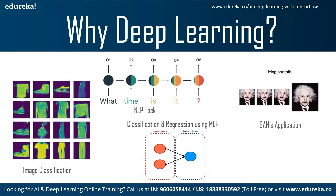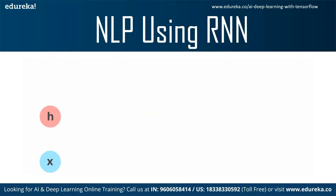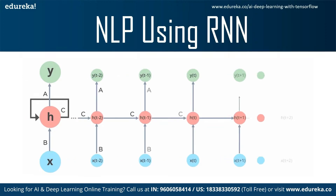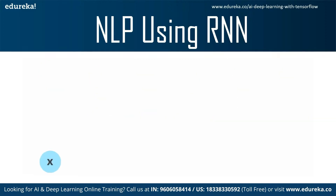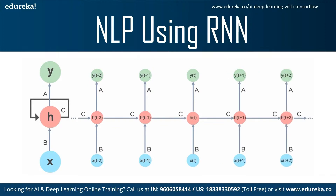Now let's understand how we can process natural language data using RNNs. RNN stands for Recurrent Neural Network and is used to deal with sequential data, which can be time series or textual data of any format. RNNs have a concept of internal memory — they can remember important things about the input received, which allows them to be precise in predicting the next outcome. Examples of sequential data include time series, speech, text, financial data, audio, video, weather, and many more.